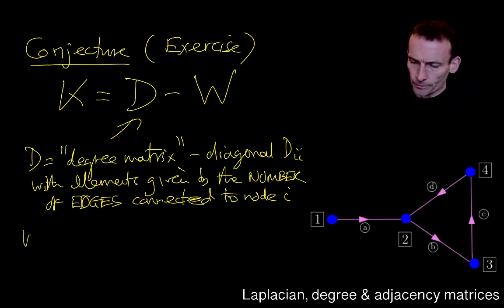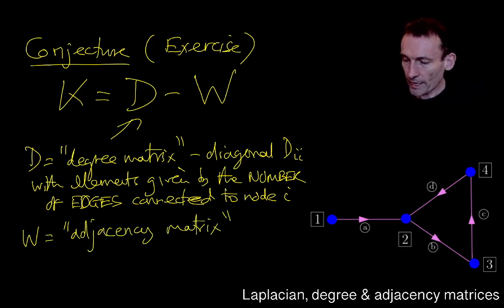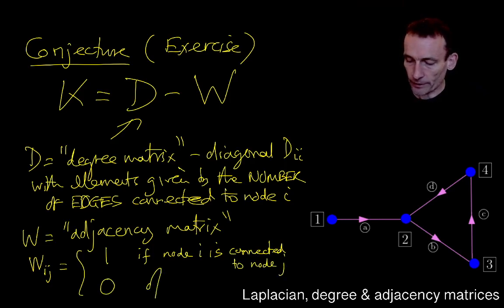And W, this is called, I'm going to call this, turns out it's not my words, everyone uses this, it's the adjacency matrix. And basically this isn't diagonal. So it's got an ij component. This is equal to one if node i is connected by an edge, by single edge, to node j, and zero otherwise.